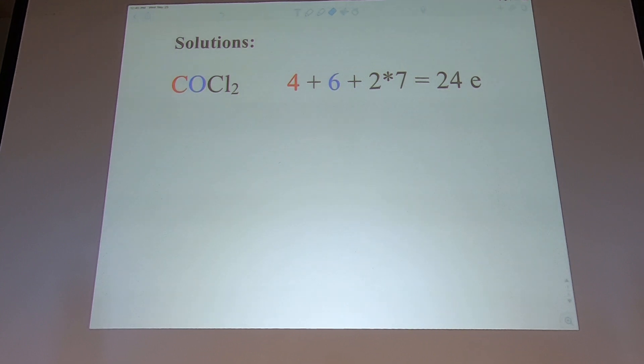Carbon, oxygen, chlorine. So four plus six plus seven times two equals 24 electrons. And then which one do I put in the middle? I don't want to put oxygen in the middle. Chlorine maybe, but chlorine means you're on the outside. So the only thing left is carbon.